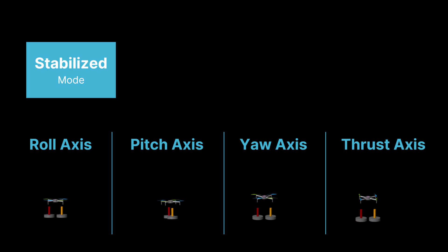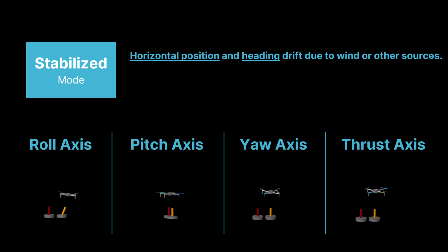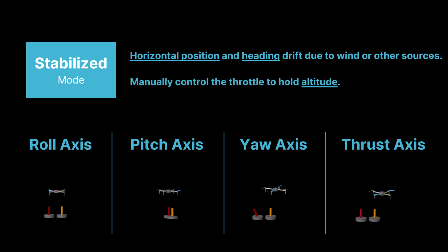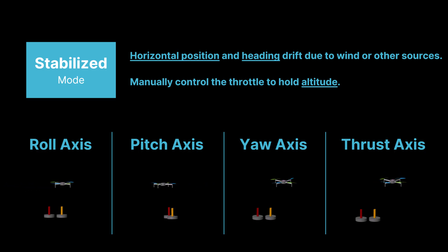Please note that in stabilized mode, the drone may drift horizontally due to wind or other sources, and the operator must manually adjust the throttle to maintain altitude, as the autopilot only stabilizes the roll, pitch, yaw, and vertical movement.